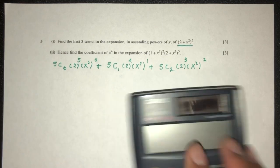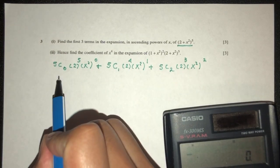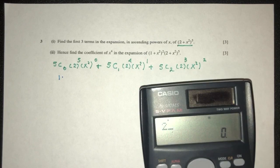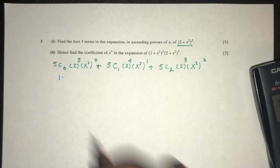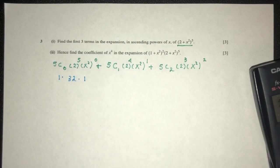So now we just have to simplify one by one. So what is 5 choose 0? This is 1. 2 power 5 should be 32, let's check. That is 32 indeed. Here we have 1, because anything power 0 is just 1.